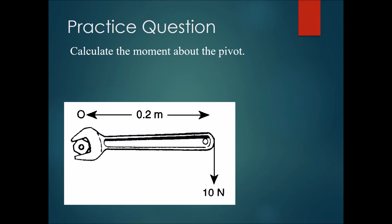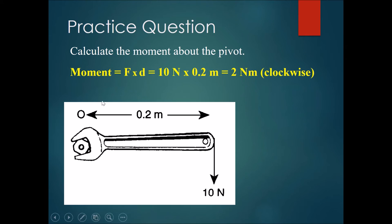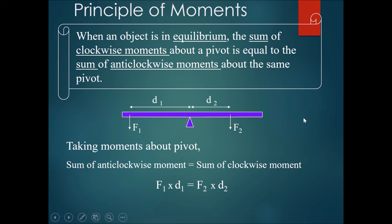The moment equals force times the perpendicular distance from the pivot. The perpendicular force is 10 Newtons, and the distance from the force to the pivot is 0.2 meters. Therefore, the moment equals 10 Newtons times 0.2 meters, giving 2 Newton meters. We can also label the direction, which is clockwise. Now we'll use this in what we call the principle of moments.